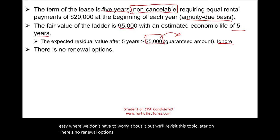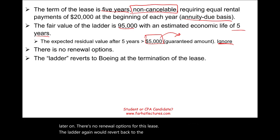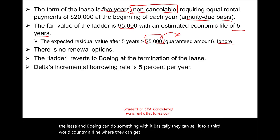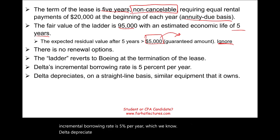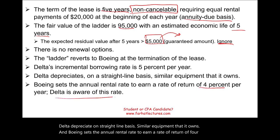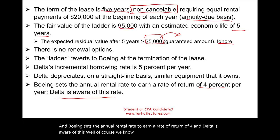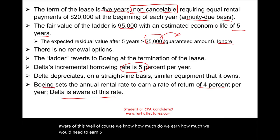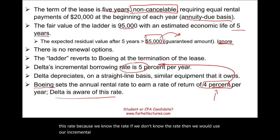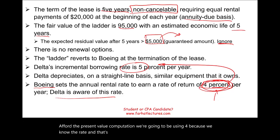There are no renewal options for this lease. The ladder reverts back to Boeing at termination — Boeing can sell it to another airline. Delta's incremental borrowing rate is five percent per year. Delta depreciates similar equipment on a straight-line basis. Boeing sets the annual rental rate to earn a rate of return of four percent, and Delta is aware of this. Since we know the implicit rate is four percent, we use four percent for the present value computation — if we didn't know it, we would use our incremental borrowing rate of five percent.